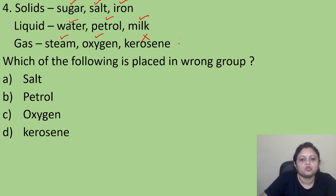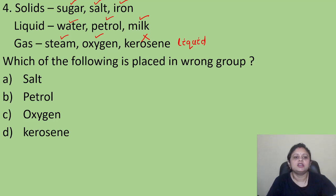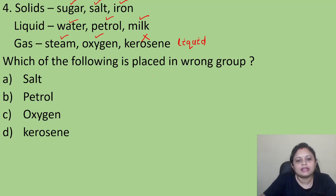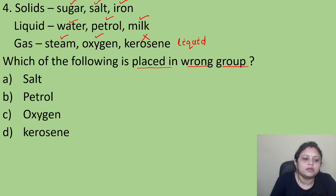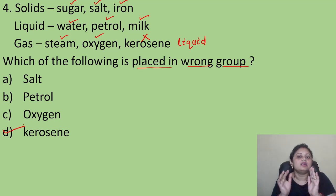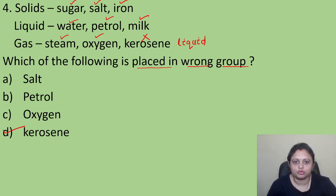Kerosene is not a gas because kerosene is in the liquid state. So which of the following is placed in the wrong group? Kerosene is present in the wrong group — it should be placed in the liquid group.